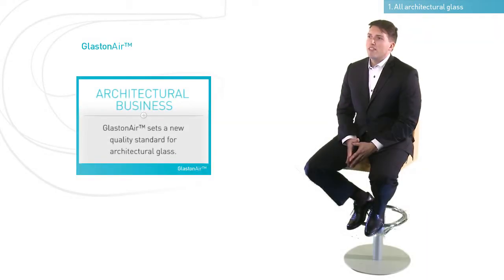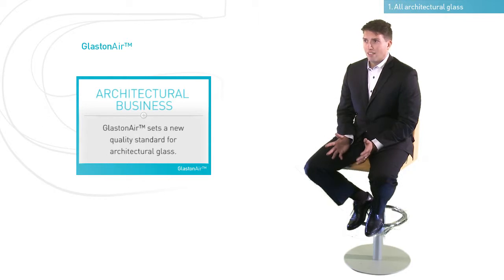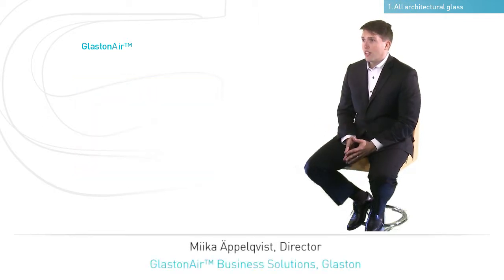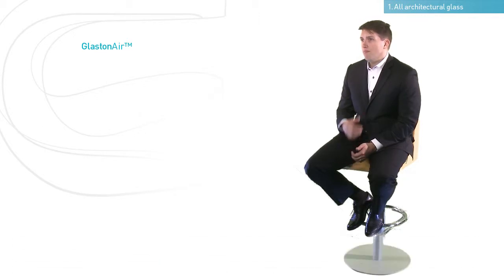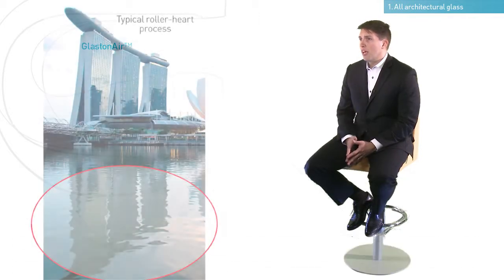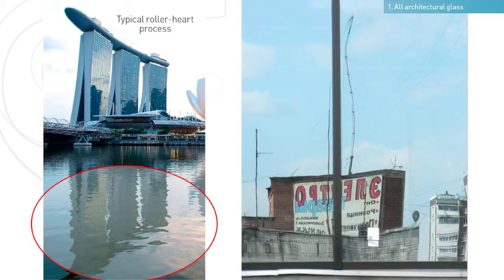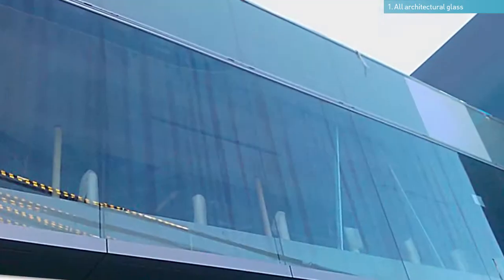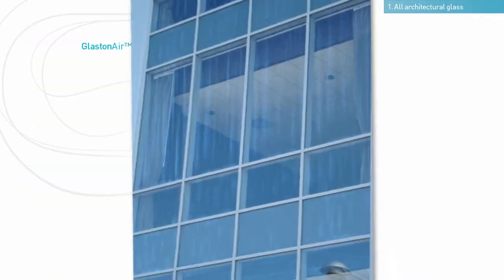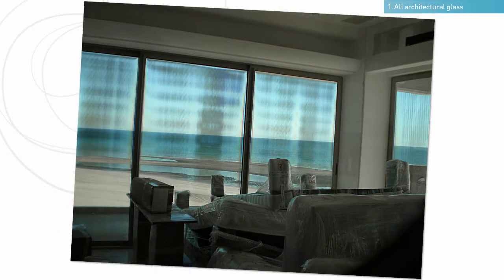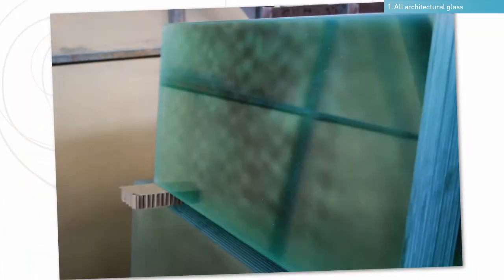Glass on air provides significant improvements for all architectural glass applications, and especially for glass facades and other commercial glazings. In these applications, surface flatness of the glass and the minimized anisotropy effect are extremely important, and these are the challenges that glass processors face every day.